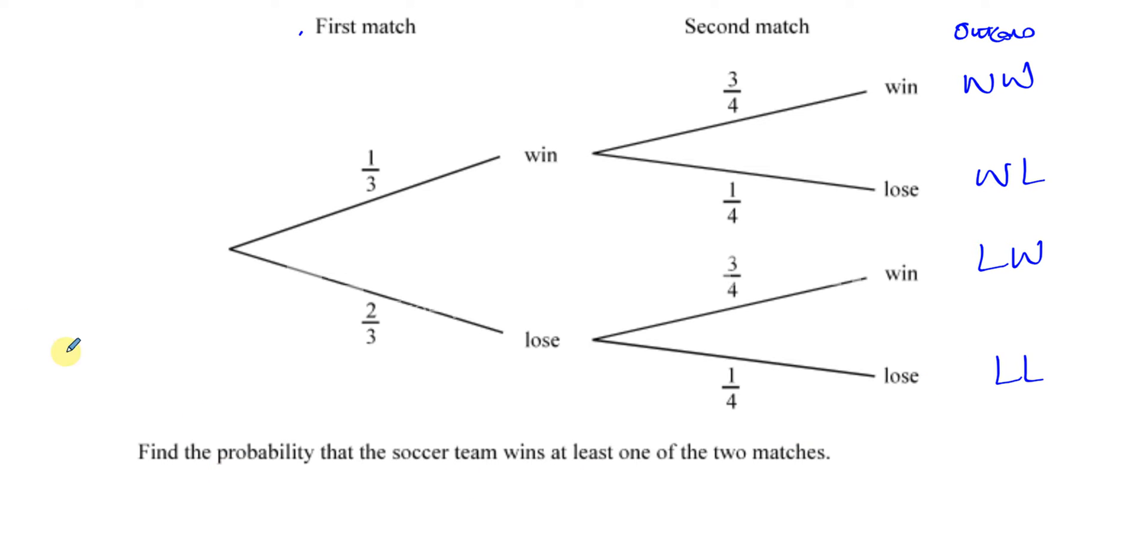And what we need to do is find the probability that the soccer team wins at least one of the two matches. So at least one means they can win one, they can win the first one, lose the second one, they can lose the first one and win the second one, or they could win both of the matches. The only thing that doesn't fit here is losing the two matches. So we've got to basically find the probability of these three outcomes.